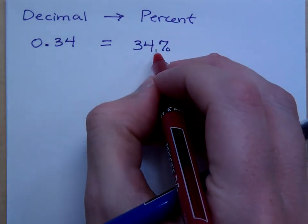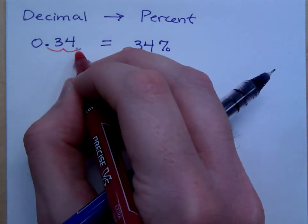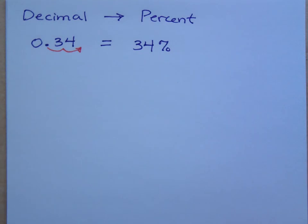Because when I had the percent before, I'd move the decimal two places to the left. Now that I have the decimal, I'm going to move it two places to the right. And here's the easy way to remember this.